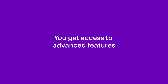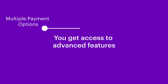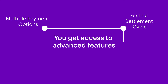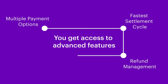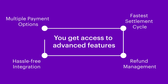With CashTree, you get access to advanced features like a wide range of payment options. Add 120 plus domestic and international payment modes including net banking, cards, UPI, PayPal and other payment modes. Fastest Settlement Cycle: get paid faster with CashTree's next day settlement cycle. Refund Management: CashTree lets you disperse refunds to your customers directly from your merchant dashboard. Hassle-free integration: add the CashTree plugin and start accepting payments without writing a single line of code.